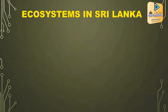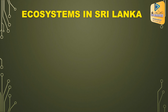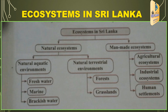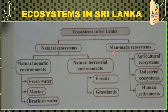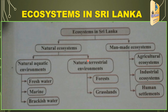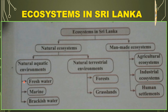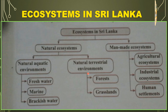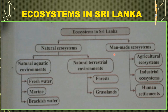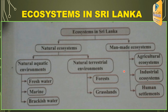Now we will show the ecosystems in Sri Lanka. Ecosystems in Sri Lanka are divided into natural and man-made ecosystems. Natural ecosystems are divided into aquatic and terrestrial environments. Examples for aquatic ecosystems are fresh water, marine, and brackish water. Terrestrial environments are forests and grasslands. Man-made ecosystems are agricultural, industrial, and human settlement ecosystems.